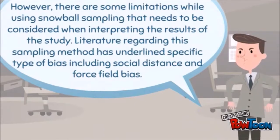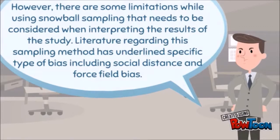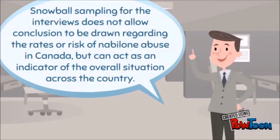There are some limitations while using snowball sampling that need to be considered when interpreting results. Literature regarding this method identifies specific types of bias, including social distance — the probability of one individual being connected to another as a function of the social distance between them — and false field bias, where certain characteristics such as popularity can create greater likelihood of targeting certain individuals. Snowball sampling for the interviews does not allow conclusions to be drawn regarding the rates or risk of Nabilone abuse in Canada, but it can act as an indicator of the overall situation across the country.